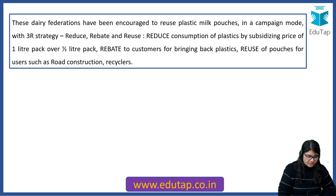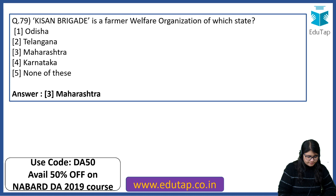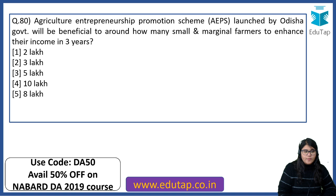Kisan Brigade is a farmer welfare organization of which state? The answer is Maharashtra. Agriculture Entrepreneurship Promotion Scheme launched by the Odisha government will benefit around 2 lakh small and marginal farmers to enhance their income in 3 years.